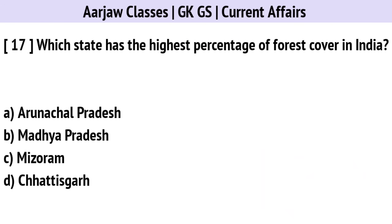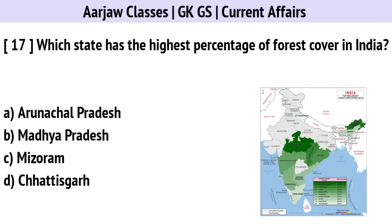Which state has the highest percentage of forest cover in India? Correct option is C — Mizoram.